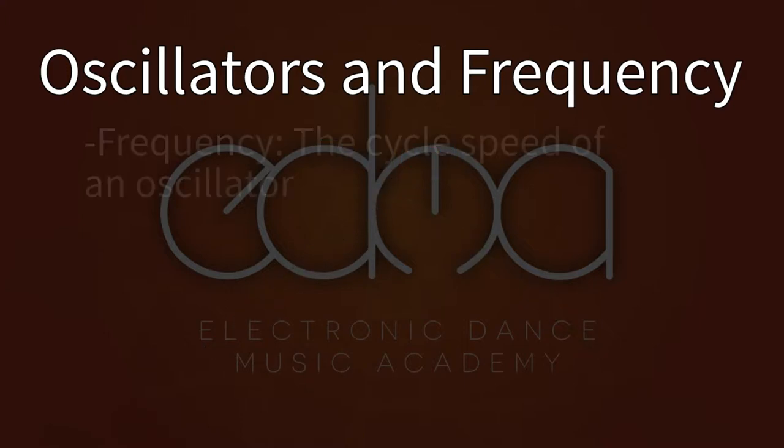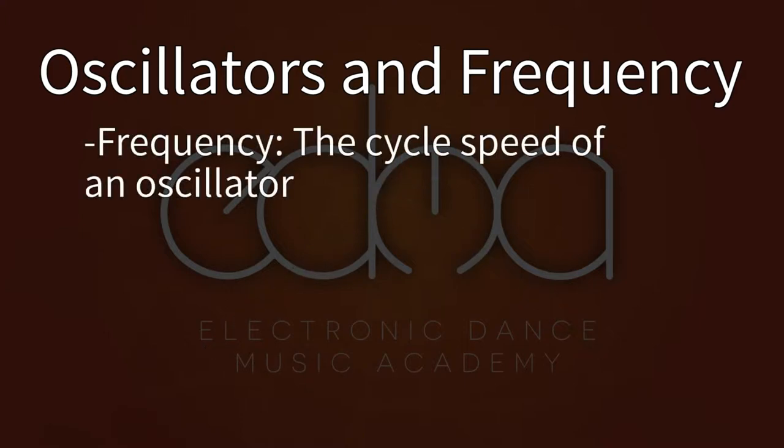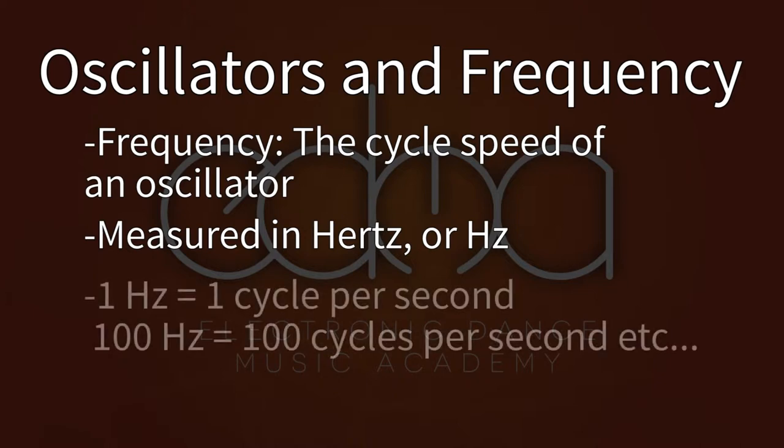The speed of these cycles is known as frequency. Frequency uses a measuring unit called hertz, commonly abbreviated as Hz. If an oscillator has a frequency of 100 hertz, it will perform 100 cycles through its wave shape per second. This determines the pitch of your sound. Slower cycles will produce a low bassy sound and faster cycles produce higher treble sounds. The range of human hearing is between 20 hertz and 20,000 hertz.